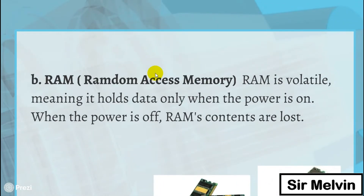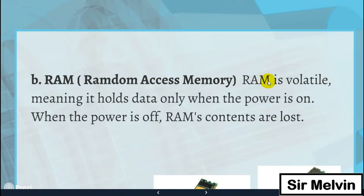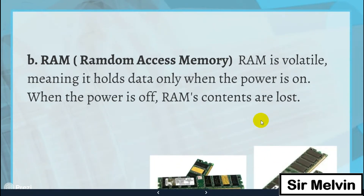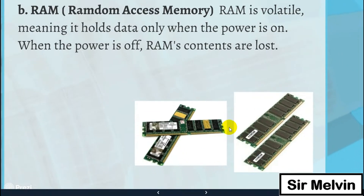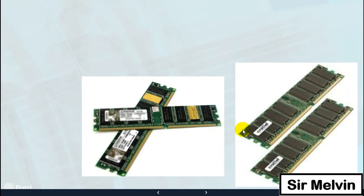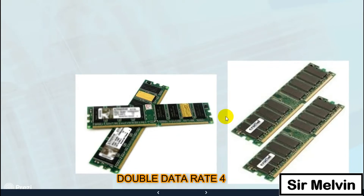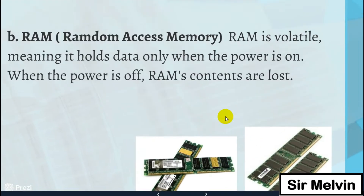The second type is RAM, or random access memory. RAM is volatile, meaning it holds data only when the power is on. When the power is off, the data in RAM is lost, so it is not functional when the computer is powered off. The latest RAM nowadays is DDR4, which stands for double data rate 4.